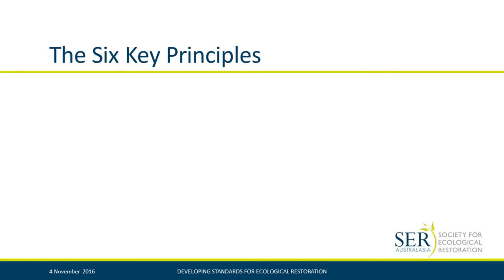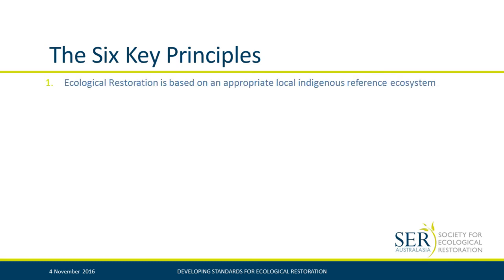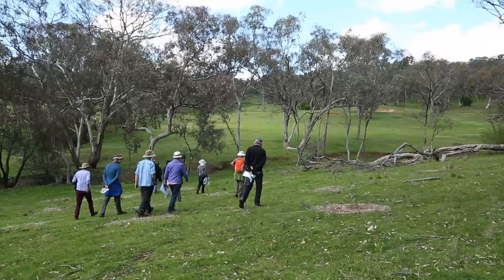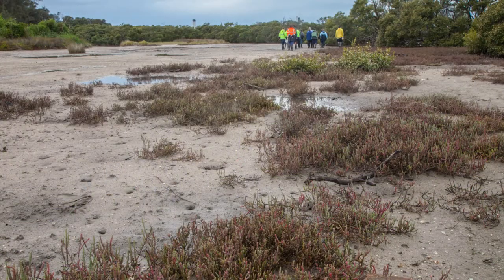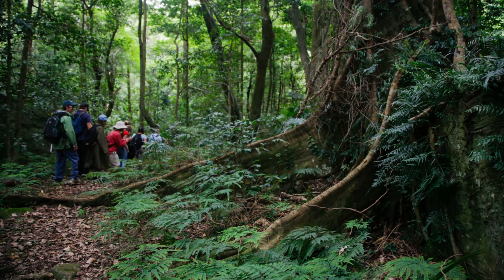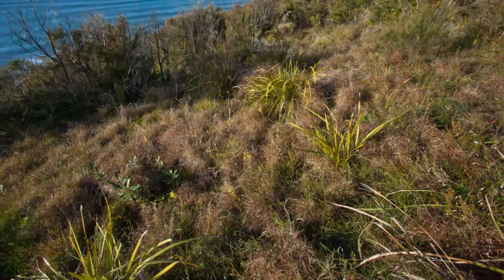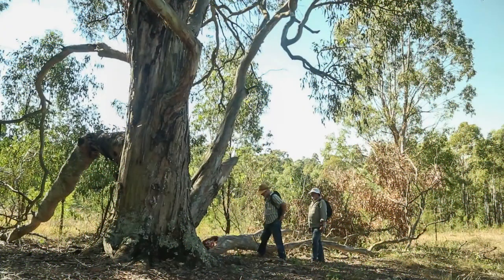Key Principle 1: ecological restoration is based on an appropriate local indigenous reference ecosystem. Ecological references identify the particular terrestrial or aquatic ecosystem that is the target. This involves describing the specific compositional, structural and functional attributes before we can really say restoration has been achieved. When developing our targets and understanding our goals, it's always great to look at that reference ecosystem and really harness what it is that we're aiming for with all the different ecosystem attributes.